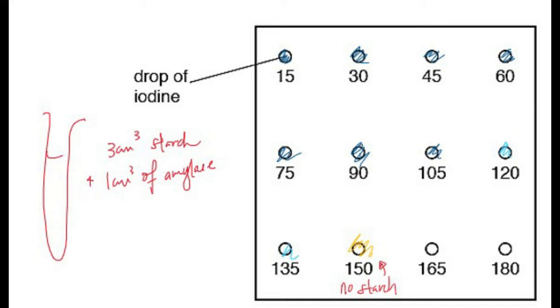At first, starch will still be present, and therefore the iodine is going to turn blue. But after a while, that dark blue should become lighter and lighter, and eventually be yellow. After a certain amount of time, the iodine test would be negative because it would have no starch. That's when you know all starch has been converted to maltose or glucose, and the reaction is complete.